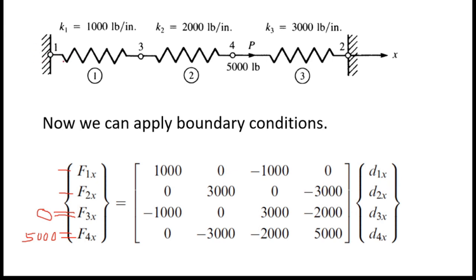Now we go to displacements. D1X means displacement of node 1. We know nodes 1 and 2 are fixed, therefore there are no displacements at those nodes — D1X and D2X both equal 0. However, there are displacements at nodes 3 and 4, and we don't know those values, so I will keep D3X and D4X as unknowns.